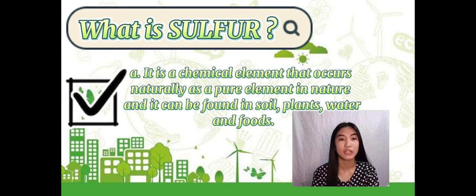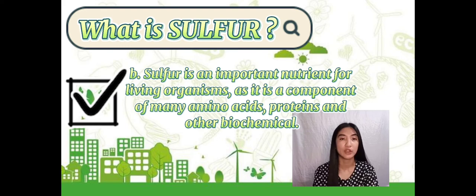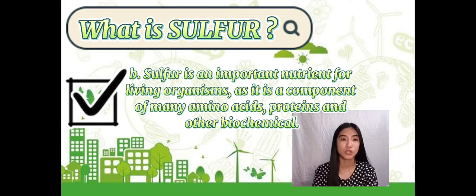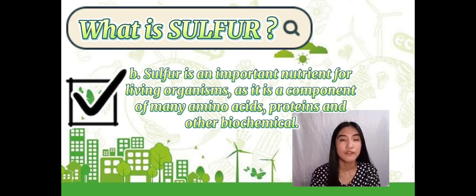Sulfur is a chemical element that occurs naturally as a pure element in nature and it can be found in soil, plants, water and also in our foods. Sulfur is an important nutrient for living organisms as it is a component of many amino acids, proteins and also other biochemicals. Meaning, it is an essential element of life that is vital and what we use in the biogeochemical cycle, which is the nutrients in the ecosystems from living things and the non-living things.